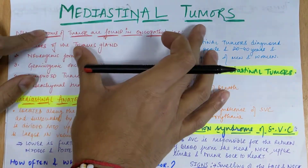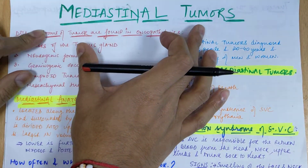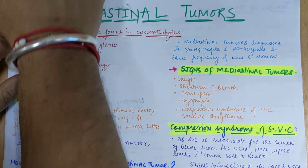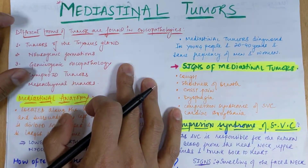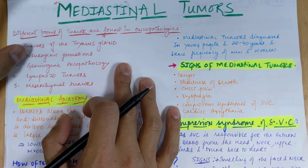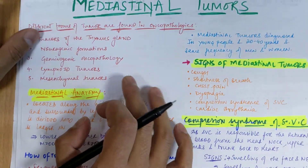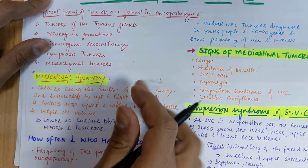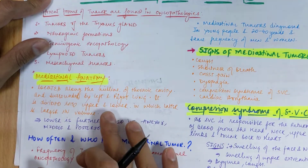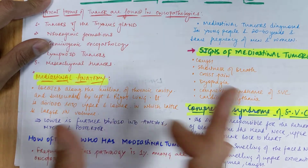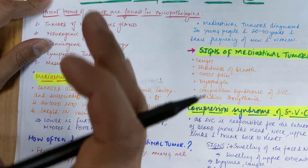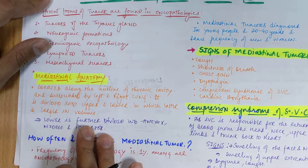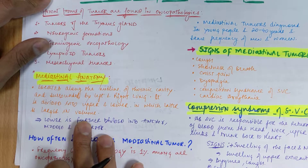In this video we'll be discussing mediastinal tumors. First, we have to see the anatomy of the mediastinum. The mediastinum is located between the two lungs, surrounded by both the right and left lung, and it is situated in the midline of the thoracic cavity at your sternum. It is divided into upper and lower compartments.